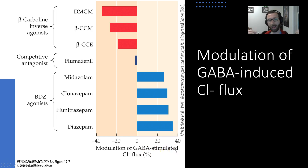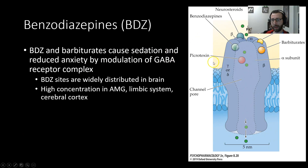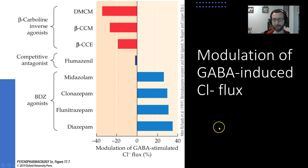Action at this allosteric site influences how much chloride moves through. When benzo-class drugs are bound to the benzodiazepine site and GABA comes along and binds, the amount of chloride moving through is increased. Critically, because these are allosteric modulators, they don't do anything in the absence of GABA — both GABA and the benzo must be present for anything to happen. If GABA is present and a benzo is present, we get increased chloride flux.